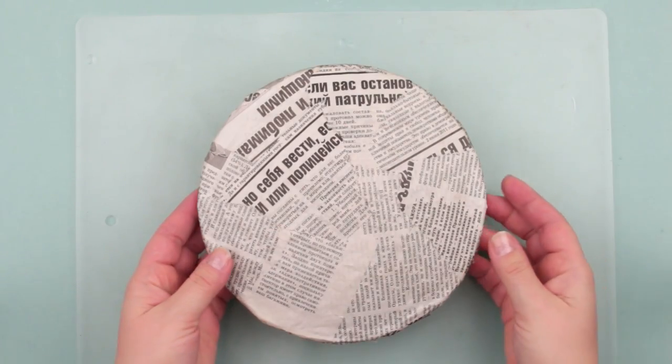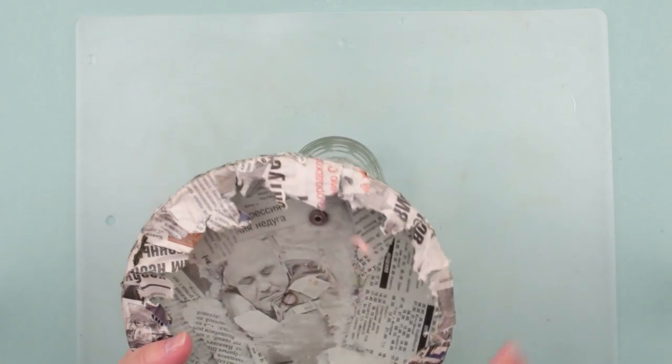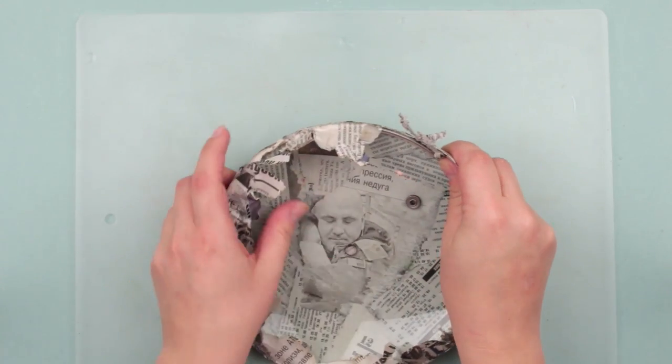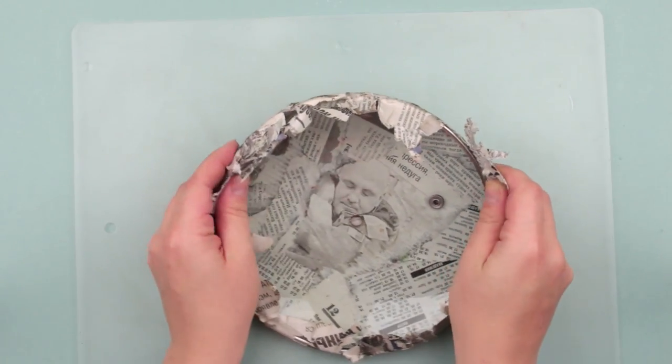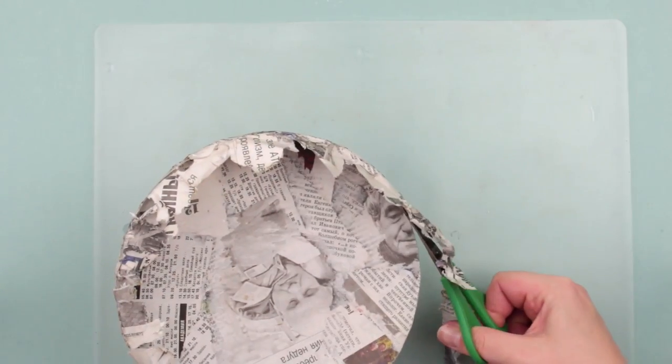When the paper is dry, remove the paper mache from the lid. Unfold the edges from the back. Cut it out carefully.